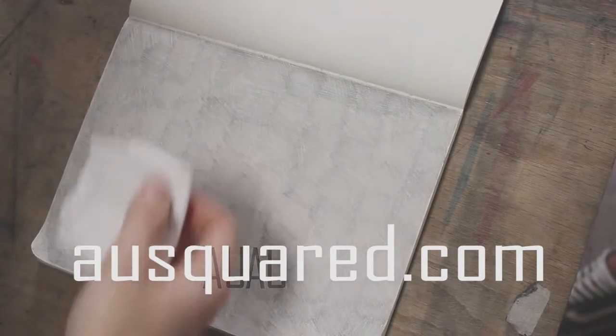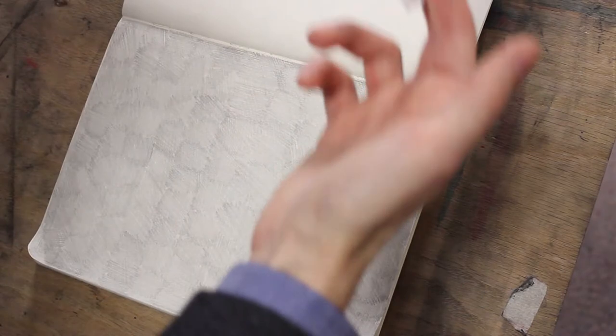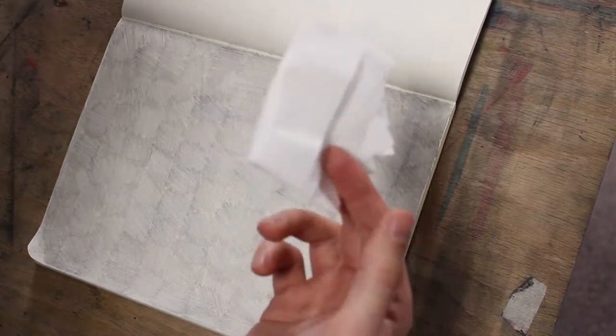So basically what I've done is taken a 3B pencil and covered the paper with graphite. This is like the cheater's way of starting a drawing. And then you need institutional toilet paper because it's super cheap and doesn't have any lotiony stuff in it, it's just toilet paper.